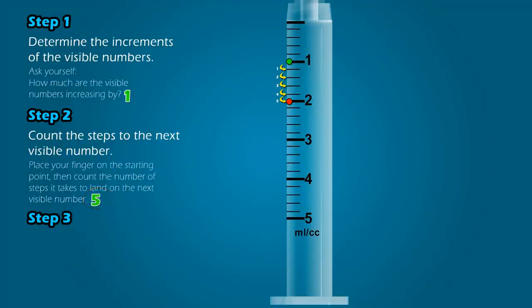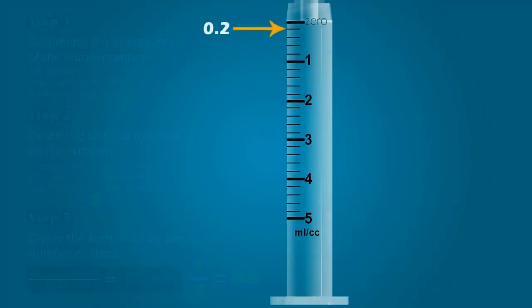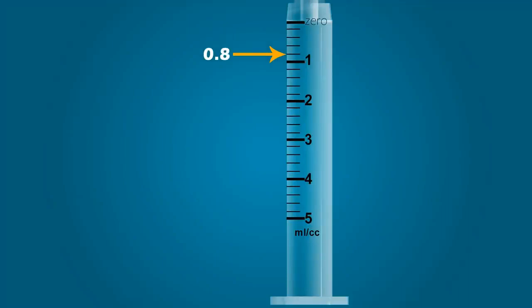Step 3: Divide the increment by the number of steps. Divide the answer from step one by the answer from step two. When the increment of one is divided by the number of steps, five, it equals 0.2. Therefore, each line on the syringe represents a value of 0.2. That means this line indicates 0.2 milliliters, this is 0.4, 0.6, 0.8, 1, 1.2, 1.4, and so forth.